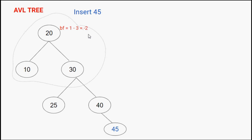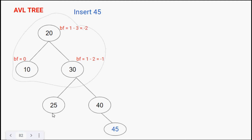Checking other nodes: node 10 is a leaf node, balance factor 0. Node 30 has left height 1 and right height 2, giving 1 minus 2 equals minus 1, which is acceptable for an AVL tree. Node 25 is a leaf node, balance factor 0. Node 40 has no left child so 0 minus 1 gives minus 1. Node 45 is a leaf node with balance factor 0. The imbalance is at node 20.